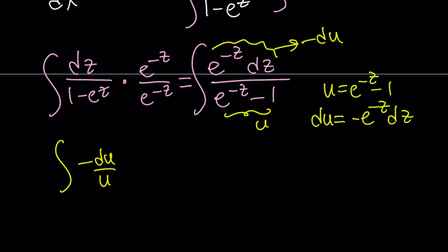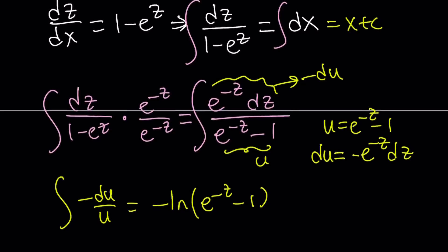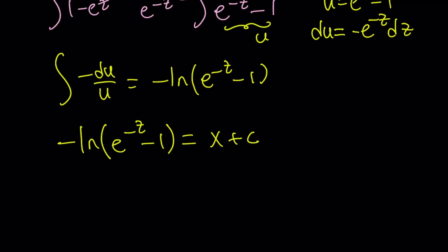So we get the following integral after using u substitution: we get negative du over u. The integral of du over u is ln u. Let's just not use the absolute value here. This becomes negative ln of e to the power of negative z minus 1. I'm going to save the constant for the right-hand side. The integral of dx is obviously just x plus c.